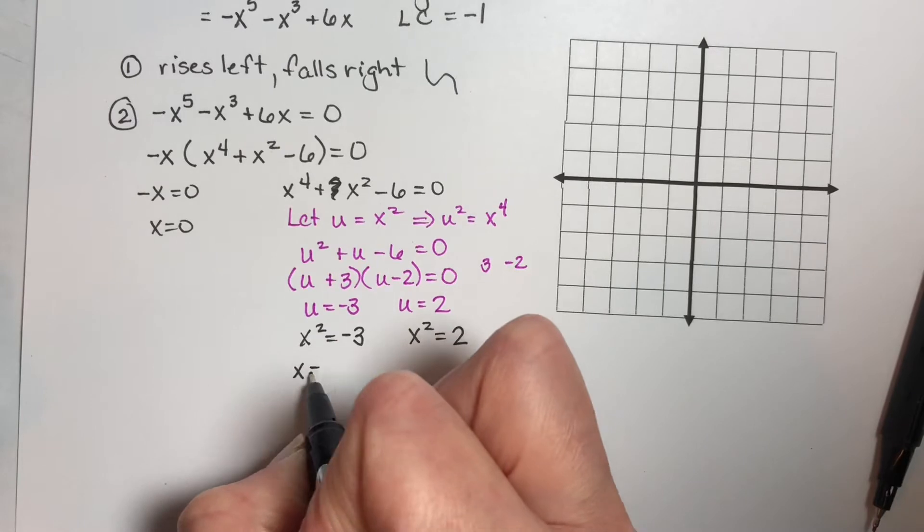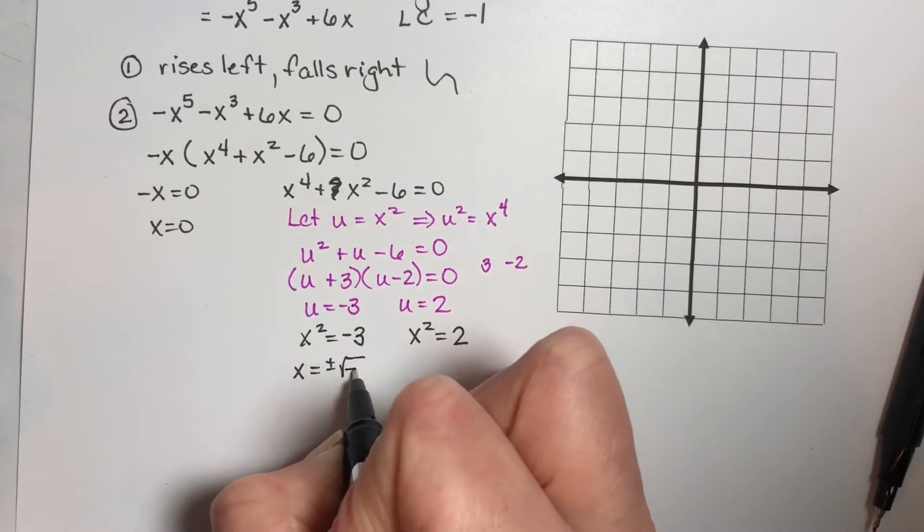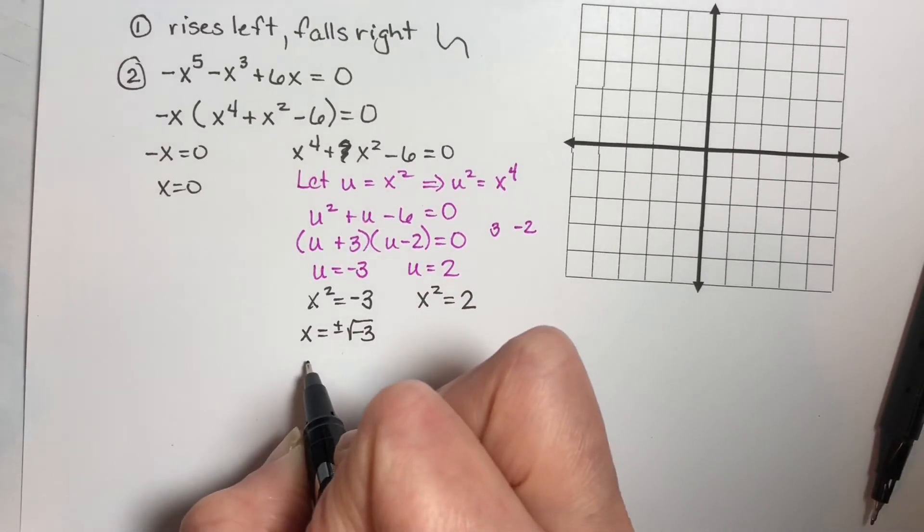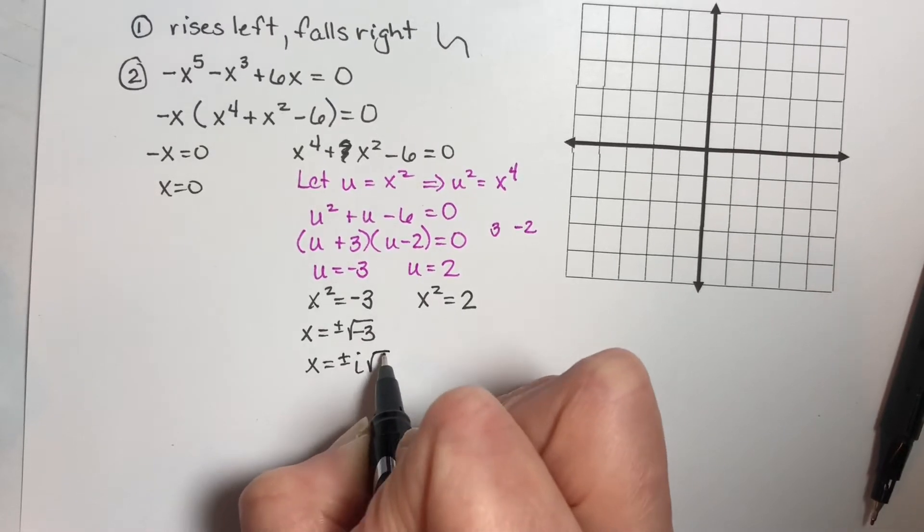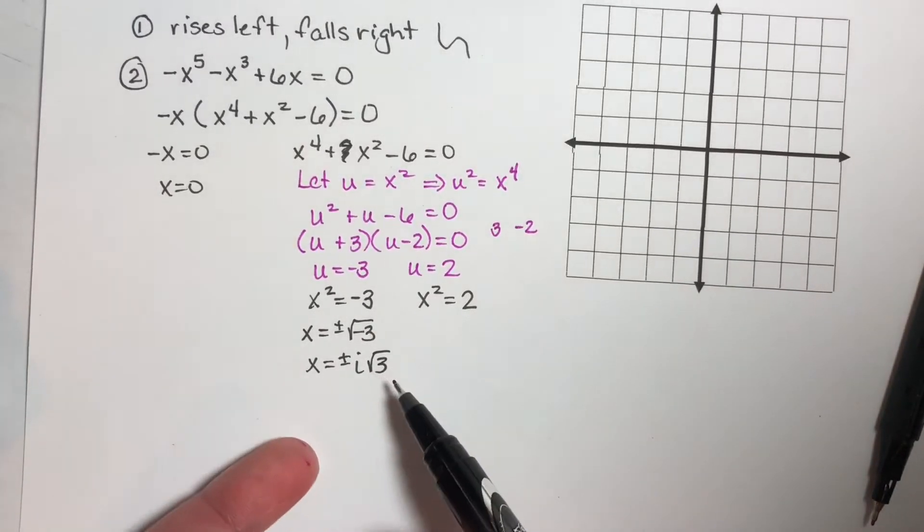Now if we take the square root of both sides right here, we get x is equal to plus or minus the square root of negative three, which is x is equal to plus or minus i square root of three. Now this is a complex number.